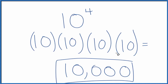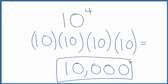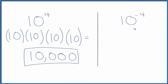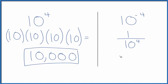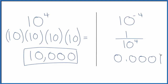What about if you were given 10 to the negative 4th? Let's look at that. So 10 to the negative 4th — the way to think about this is we could say this is 1 over 10 to the 4th. 10 to the negative 4th is 1 over 10 to the 4th. We know 10 to the 4th is 10,000, so 1 divided by 10,000 gives us 0.0001.